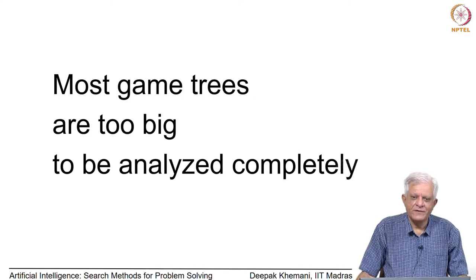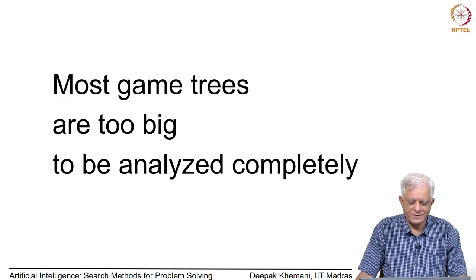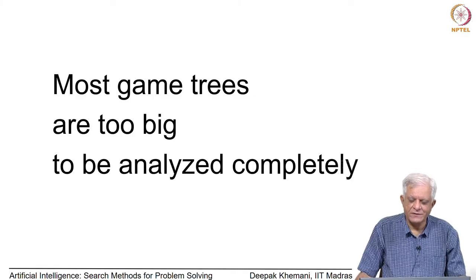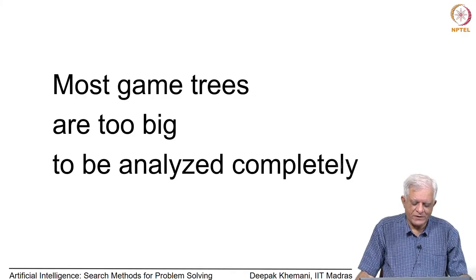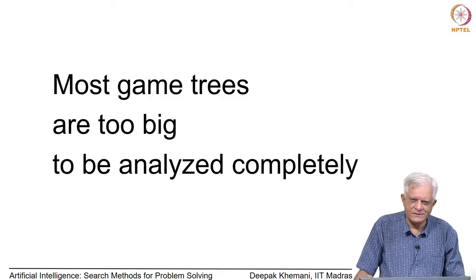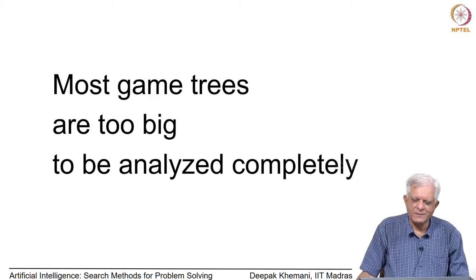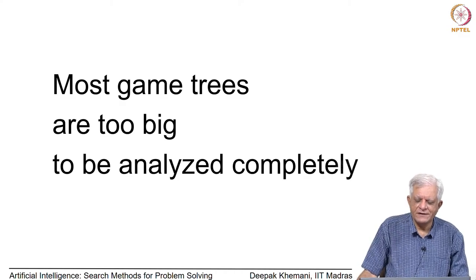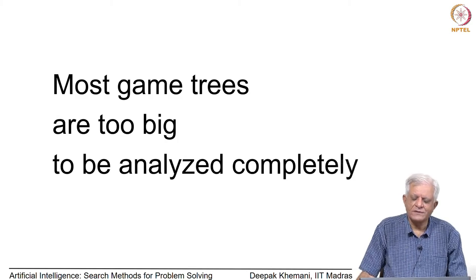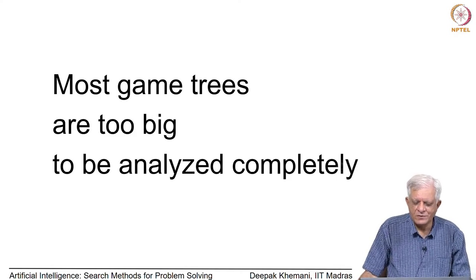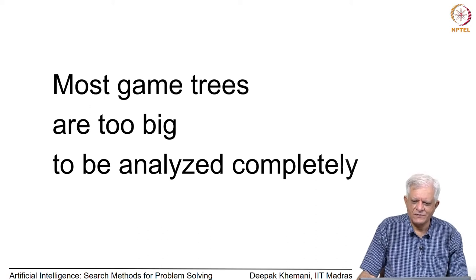Welcome back. We have been looking at games; we started by looking at game theory and observed that these are models of rational behavior in multi-agent environments. Then we narrowed down our focus to board games, which are two-person zero-sum complete information alternate-move deterministic games. We looked at how there is a notion of a minimax value for such games and how to compute that value.